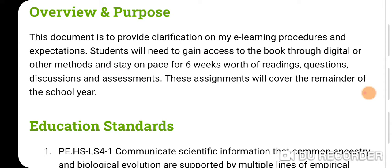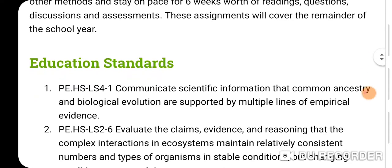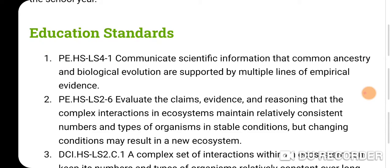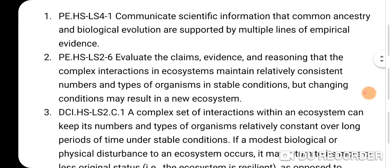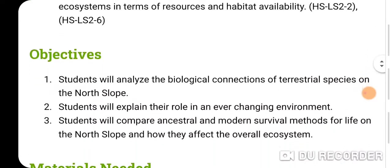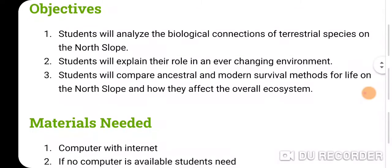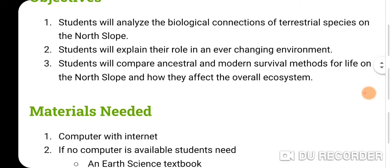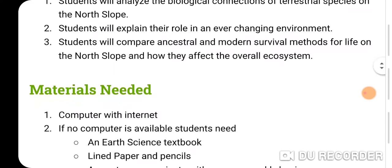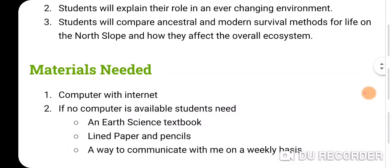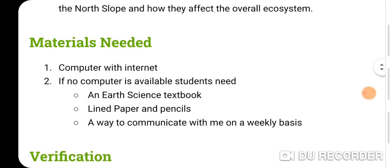Students will need to gain access to the book through digital or other methods and stay on pace for six weeks worth of readings, questions, discussions, and assessments. These assignments will cover the remainder of the school year. The objectives are that all students will analyze the biological connections of terrestrial species — terrestrial mammals specifically — on the North Slope, explain their role in an ever-changing environment, and compare ancestral and modern survival methods for life on the North Slope and how they affect the overall ecosystem.